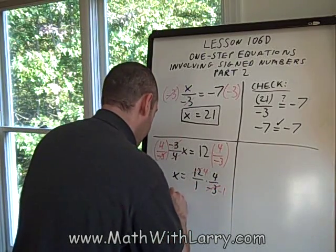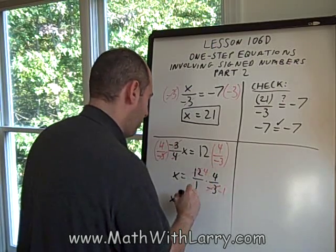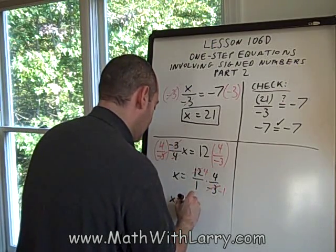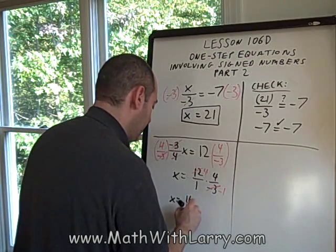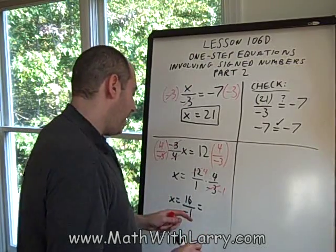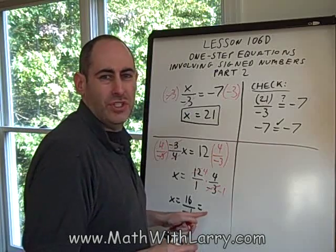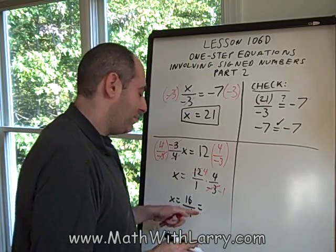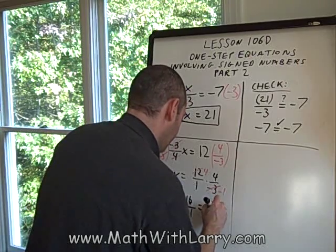So now multiplying across, we have x equals 4 times 4, which is 16. 1 times negative 1 is negative 1. Now the way we would write this is simply negative 16. We know that the 1 in the denominator doesn't matter, but a positive divided by a negative is a negative. So x equals negative 16.